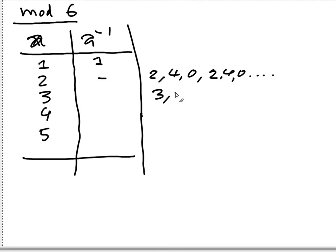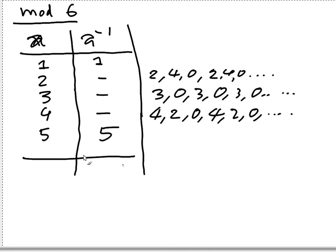How about 3? So 3 times 1 is 3, 3 times 2 mod 6 is 0. You're not gonna get inverse modulo 6 for 3 as well. How about 4? For 4 you can multiply 4 by 1, 4 by 2 you get 8 and that's 2, and 4 by 3 you get 12 that's 0. So 4 doesn't have any multiplicative inverse modulo 6.